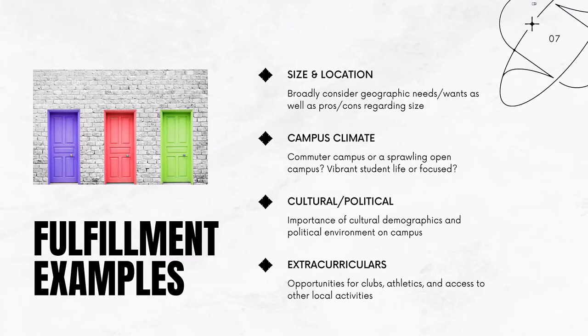Also consider extracurriculars — clubs on campus, whether you want to be an athlete or participate in intramural sports — and access to activities outside the college campus. What does the surrounding community look like? Is it in the middle of a city, a rural small college town, or the suburbs? Access to transportation might be important if you're far from home. All of these are examples of what goes into fit.